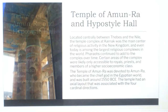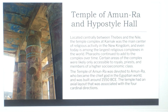The temple complex is centrally located between Thebes and the Nile. The temple complex at Karnak was the main center of religious activity in the New Kingdom and even today is among the largest religious complexes in the world. Pharaohs continued to add to the complex over time.